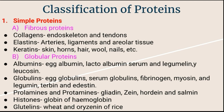Keratins form animal skin, horns, and feathers — these are the keratin proteins. Globular protein is a water-soluble protein, and most proteins belong to this group.